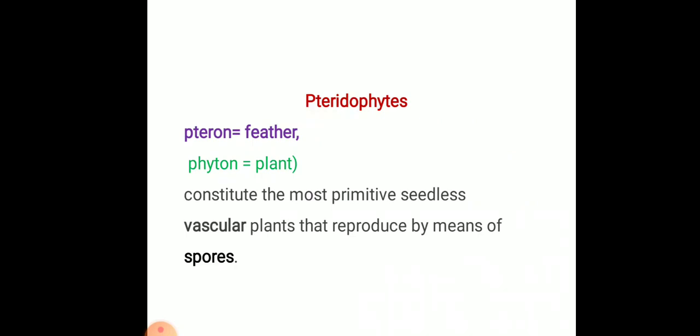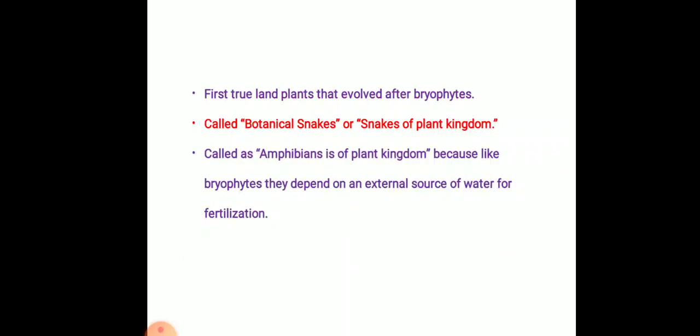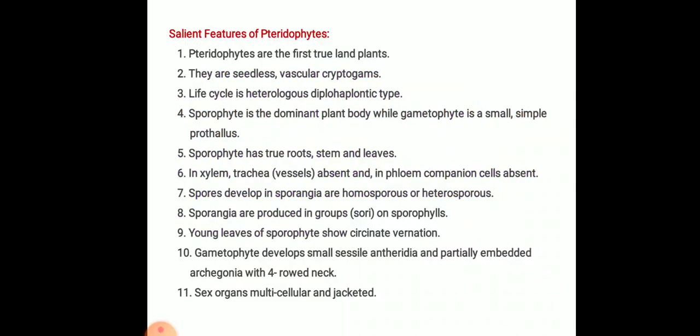Today we will discuss more about the pteridophytes. What are the pteridophytes? 'Pteron' means a feather-like structure and 'phyton' means plant. These constitute the most primitive seedless vascular plants that reproduce by means of spores. These are the first true land plants that evolved after bryophytes. They are called botanical snakes or snakes of the plant kingdom. They are also called amphibians of the plant kingdom because, like bryophytes, they depend on an external source of water for fertilization.